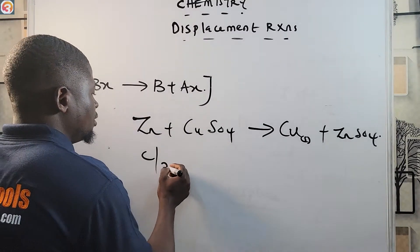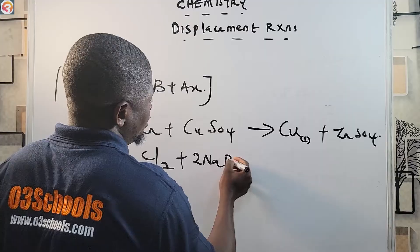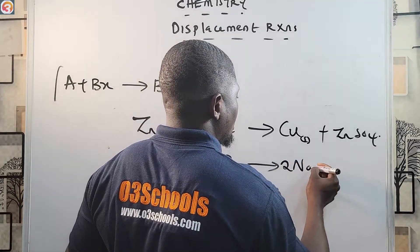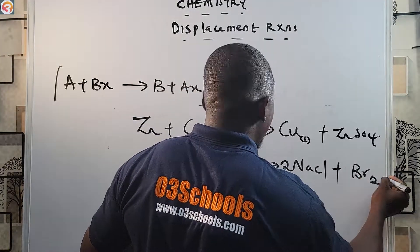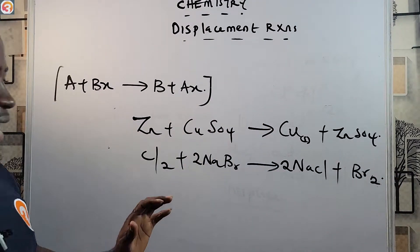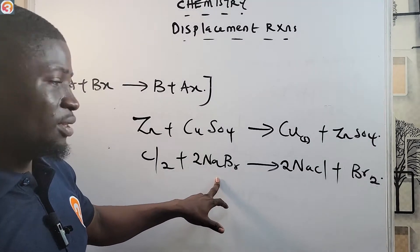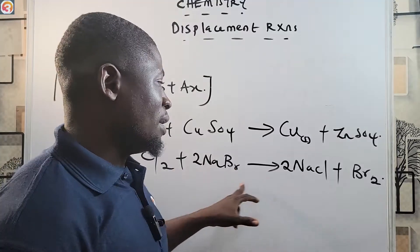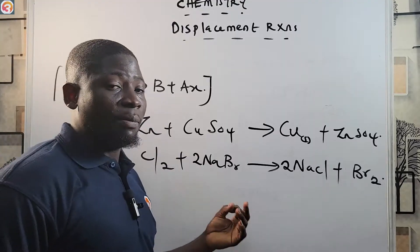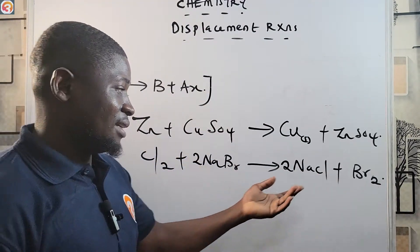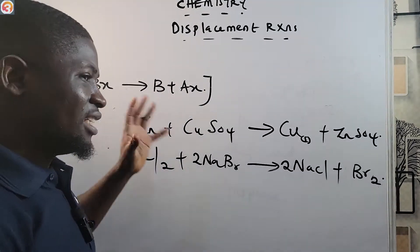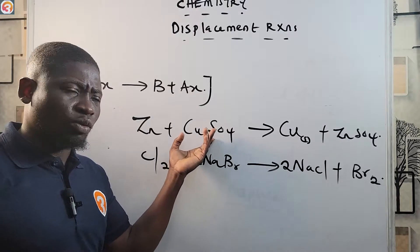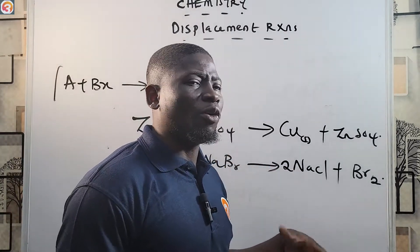Also, consider: Cl₂ + 2NaBr. This gives 2NaCl + Br₂. Chlorine is knocking bromine off from this reaction — chlorine displaces bromine because chlorine is more electronegative. In the products, bromine is now in the free uncombined state while chlorine has combined with sodium to form sodium chloride. These are halogens reacting as salts — you can see salts have formed.